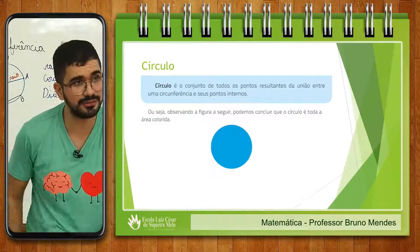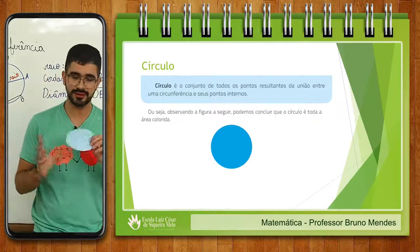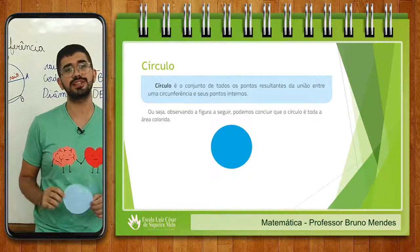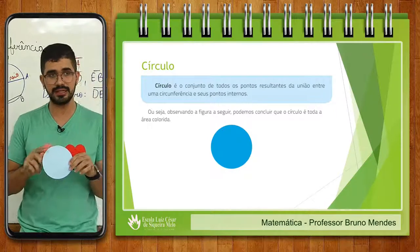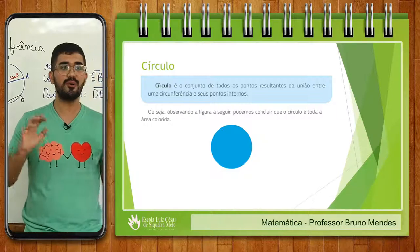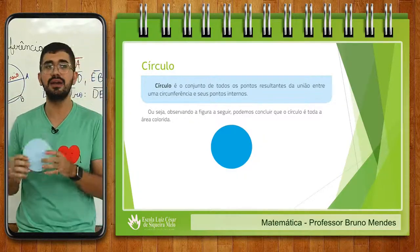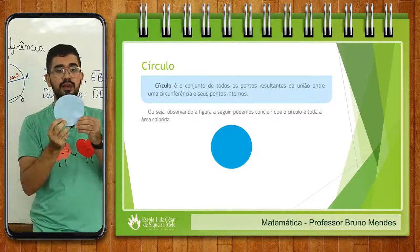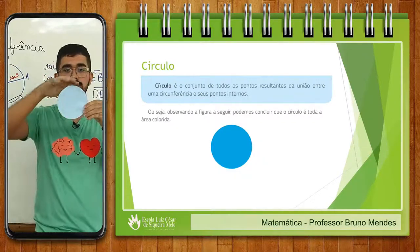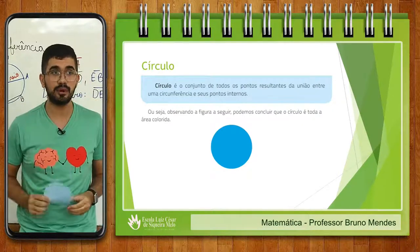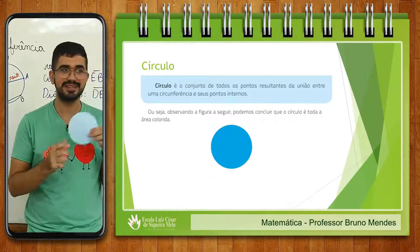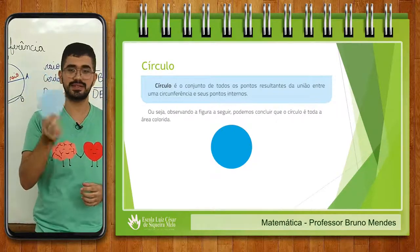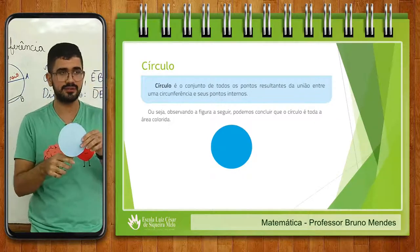E o círculo, tio Bruno? O que seria o círculo? O tio Bruno trouxe um desenhinho que representa o círculo. Enquanto a circunferência é só essa linha do contorno, o círculo é a figura plana — o conjunto de todos os pontos resultantes da união entre uma circunferência e seus pontos internos. A circunferência seria só essa linha no contorno e o círculo é o resultado da união dos pontos do contorno e dos pontos que estão dentro. Círculo é figura plana; circunferência é essa linha fechada ao redor.